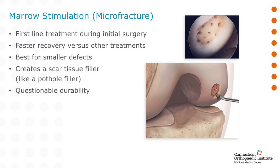One treatment for the cartilage injury is what we call microfracture. This involves, through the camera and instruments, making tiny holes within the knee to allow a scar cartilage to form. Think of it like the pothole in a road being filled with a filler — not quite as durable as the initial road, but certainly better than a pothole. It helps to protect your knee and provide longevity. The bottom right image shows an illustration of the microfracture technique, and the top right picture shows an actual arthroscopic photograph of this procedure.